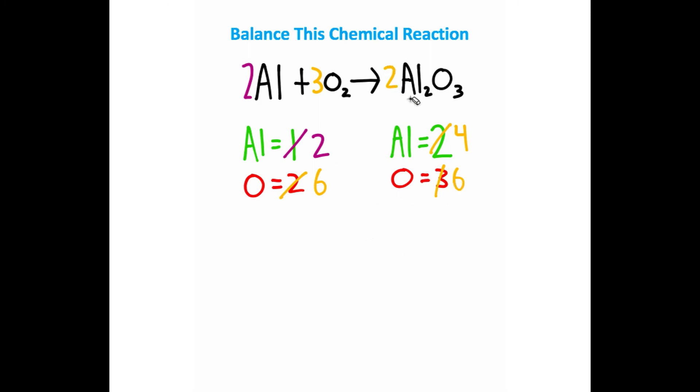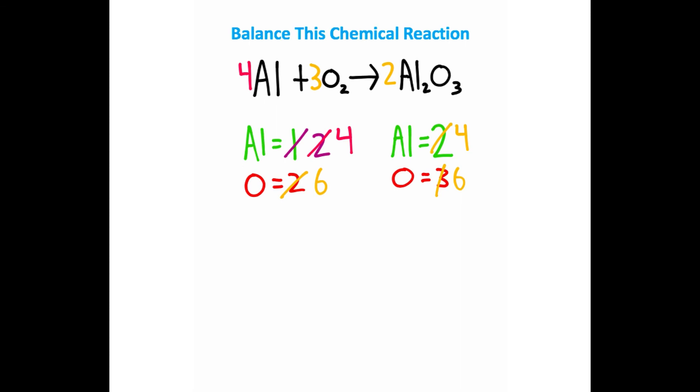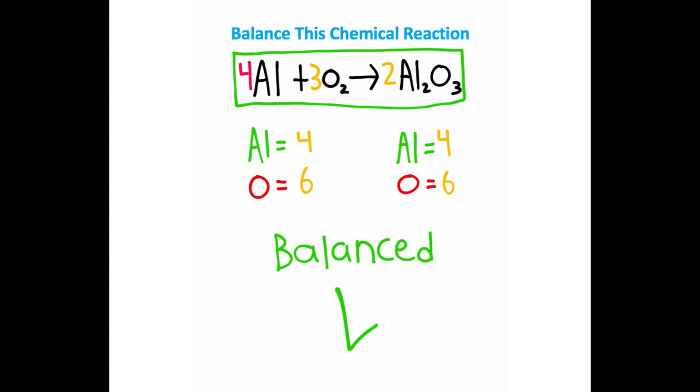But notice that when we put this 2 here, we unbalance the aluminum because now there's four aluminum on this side in total. So what I need to do is go back to the aluminum in the reactants and change that to a 4. That's going to give me four here and four here, and then six here and six here. So four aluminums on each side and six oxygens on each side. Notice now that all the numbers here are balanced, which means this equation is balanced. That was an introduction to chemistry.